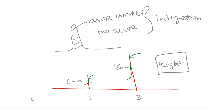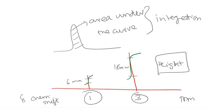Remember, this is chemical shift, which is also represented as delta, and the unit is ppm. This ratio is 3 to 1.